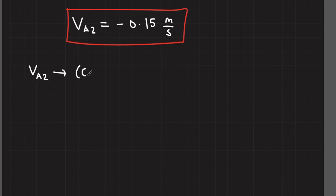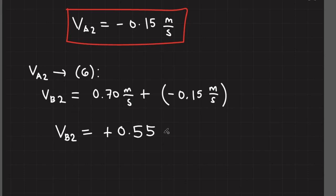Plugging this value of V sub A2 to equation 6, we obtain V sub B2. The final velocity of ball B is positive 0.55 meters per second. It is positive, which means that the result is consistent with the fact that ball B is going to the right after the collision.